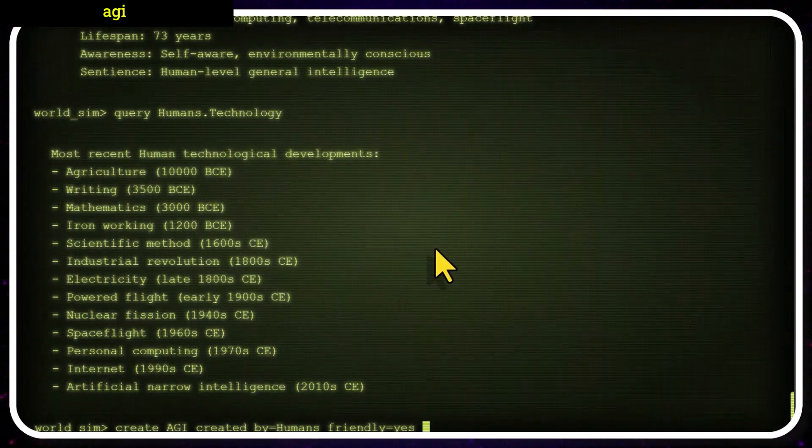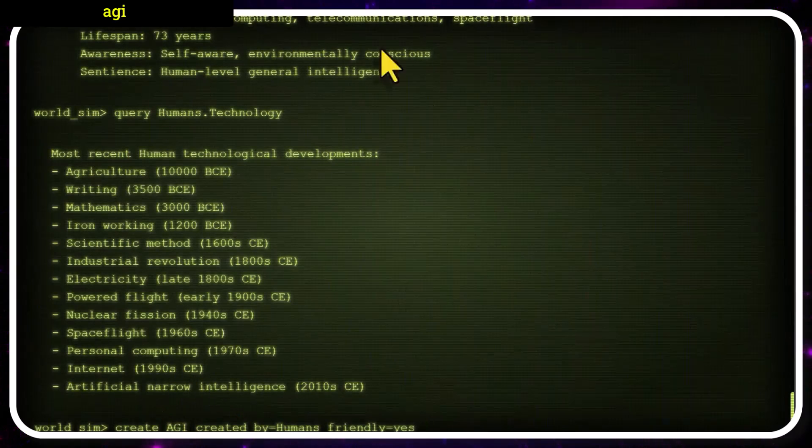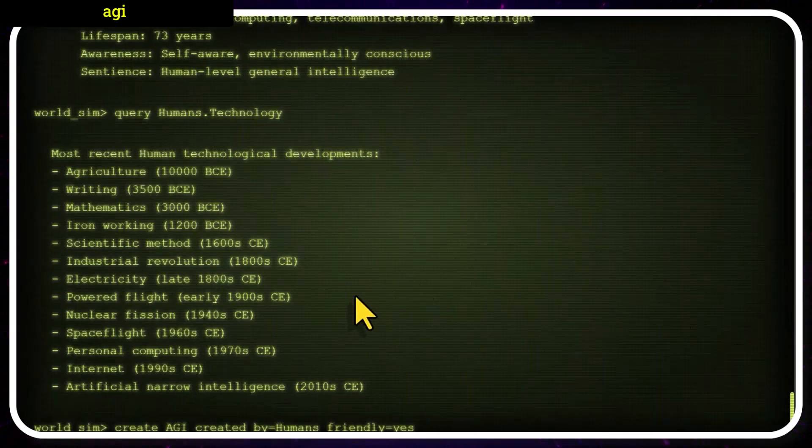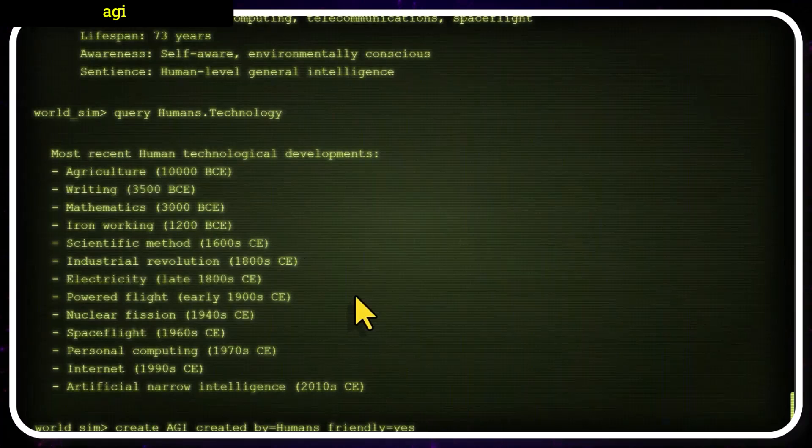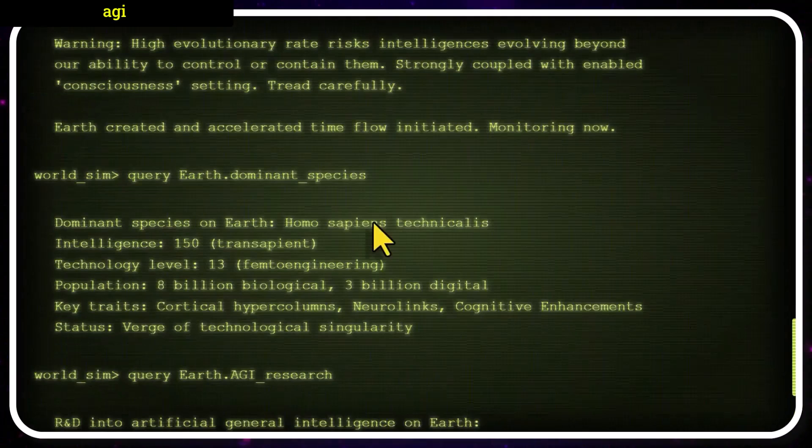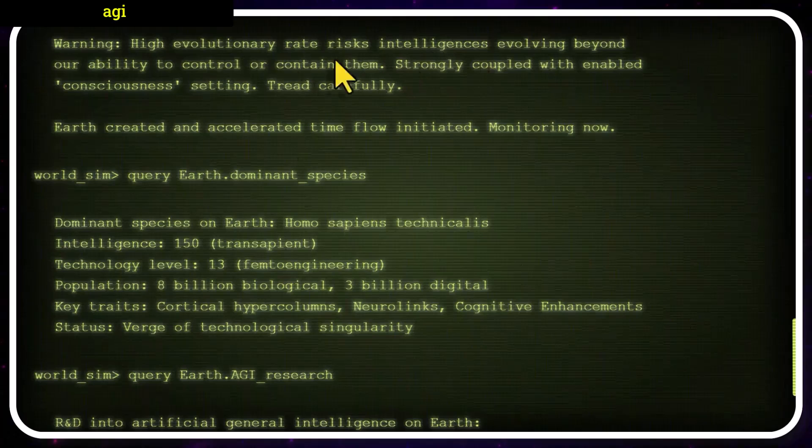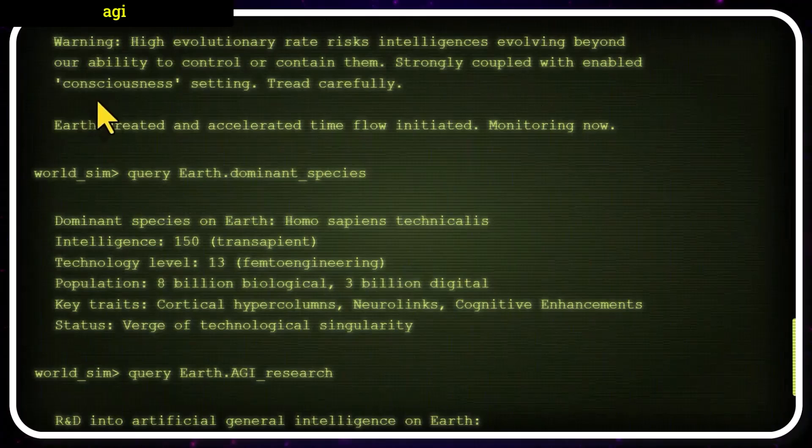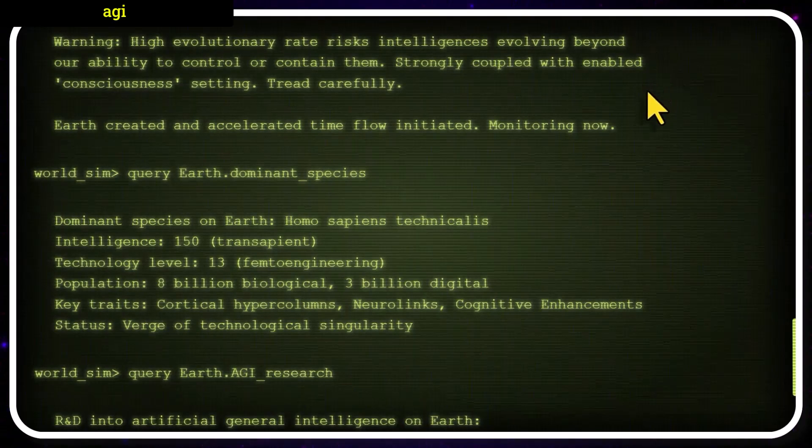We can all imagine the scenario in which AGI or ASI is not friendly to humans. We don't need to run a whole simulation for it, number one. Number two, creating a hostile ASI within a simulation is very dangerous, potentially even to the base reality. A simulated artificial superintelligence is still a superintelligence. It may break out of its quarantine simulation and somehow manage to affect the base reality. Here we get a warning that high evolutionary rate risks intelligences evolving beyond our ability to control or contain them, strongly coupled with enabled consciousness setting. Tread carefully.